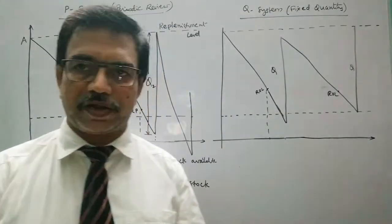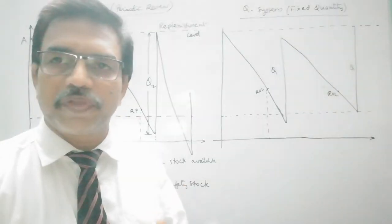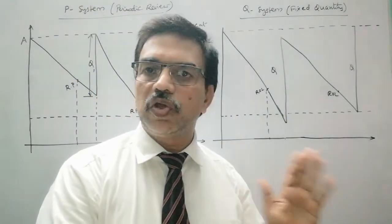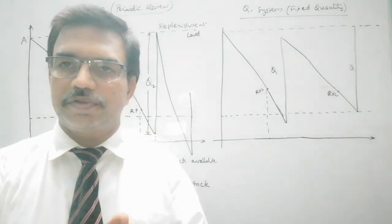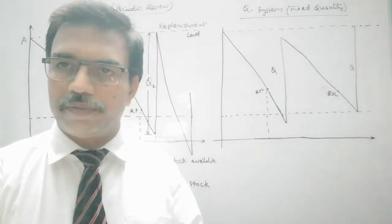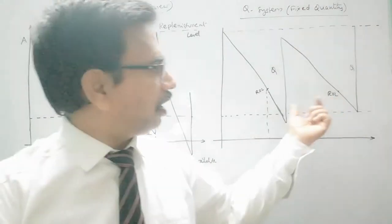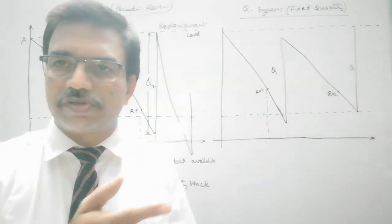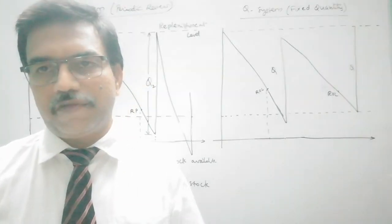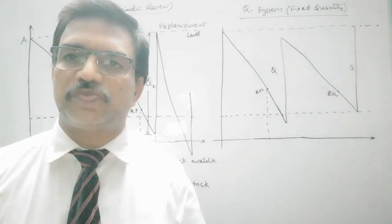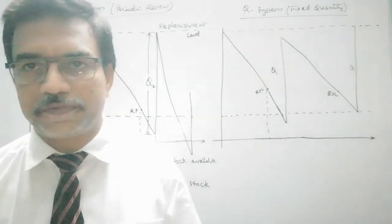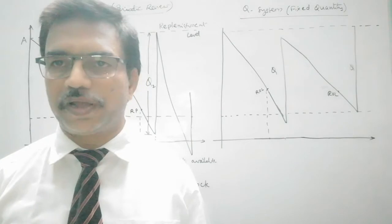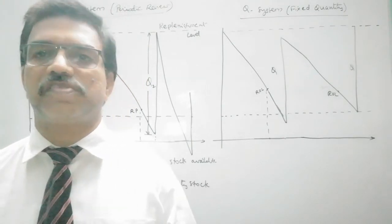So this is how these two systems work — P system and Q system. We must remember that in the P system the review period is constant whereas the ordering quantity will differ for each item. For Q system the order quantities are fixed based on the EOQ (economic order quantity) formula, but the ordering cycle time will vary. We can automate this process: as consumptions of all commodities are entered, an order will automatically be placed to the supplier and it will reach the company as per the lead time specified.